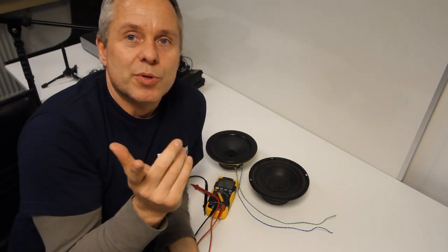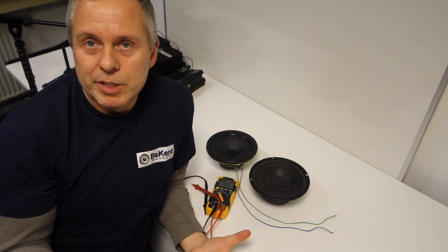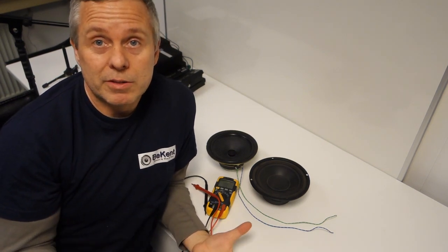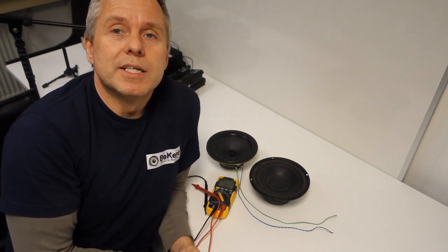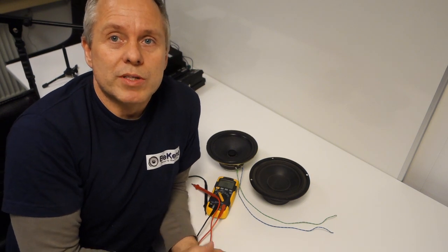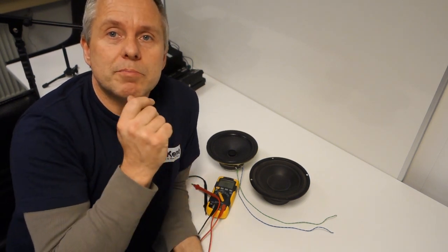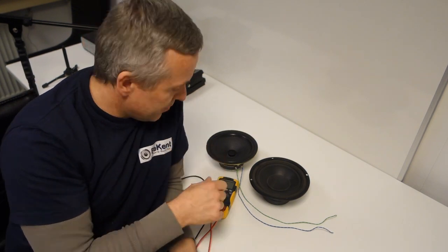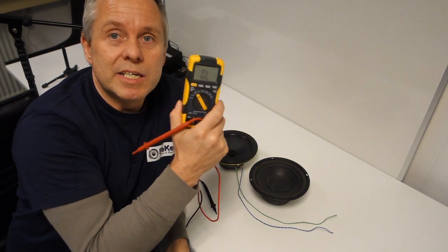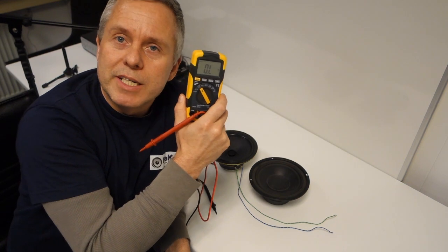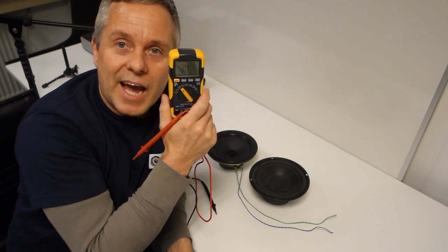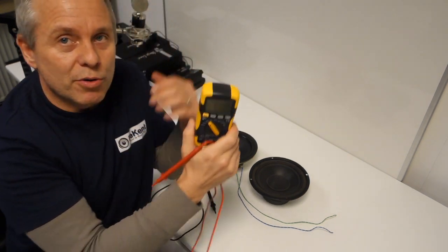So what you can do if you have two speakers, which you typically will in a stereo setup, is measure the one that doesn't have a problem and then measure what it has for this called DC resistance. If you look in the data sheets of the actual woofer, not just speaker but the actual driver, if you find that data, that data is called RE.